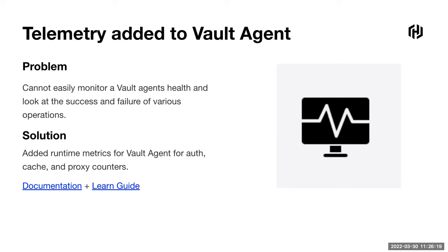Then we have the Vault Agent capability — a minimal Vault binary with specific capabilities. We've added telemetry to that so you can instrument things like whether auth is successful or failing, cache counters, proxy counters, and things like that.